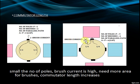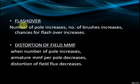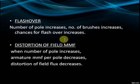Flashover: When number of poles increases, number of brushes increases and chances of flashover increase. Distortion of Field MMF: When number of poles increases, armature MMF per pole decreases, and distortion of field flux decreases.